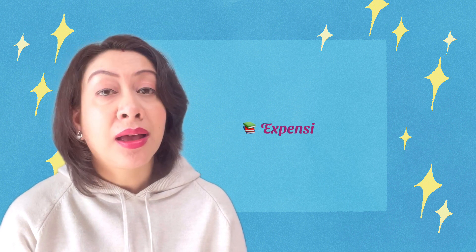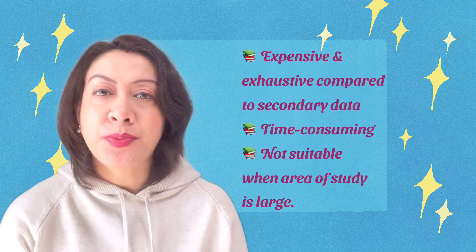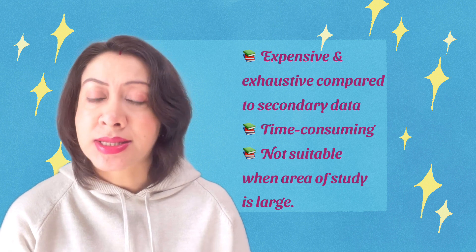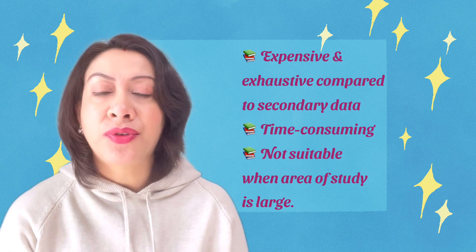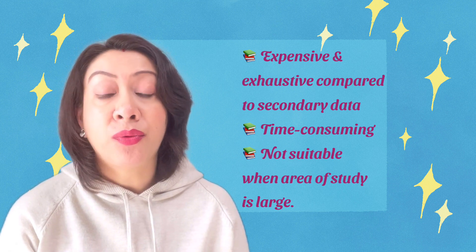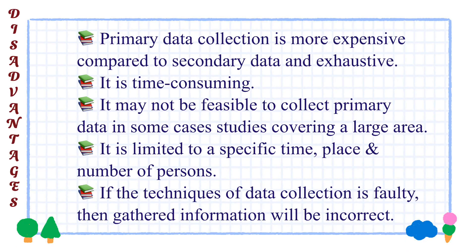In order to collect primary data you have to interview respondents one by one. Some disadvantages of using primary data: it is more expensive and exhaustive, and it is time consuming. It is not feasible to collect primary data when your area of study is very large. Further, primary data collection is limited to a specific time, place, and number of persons. If the technique of data collection is faulty, then the gathered information will be incorrect.